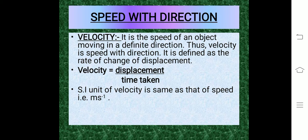Velocity is defined as the rate of change of displacement. That is, velocity equals displacement divided by time taken. The SI unit of velocity is the same as that of speed, which is meter per second.